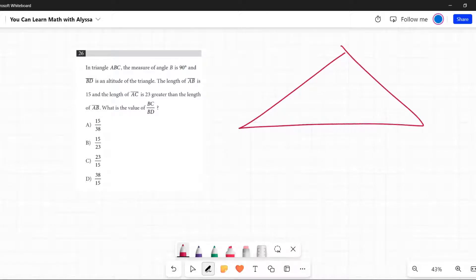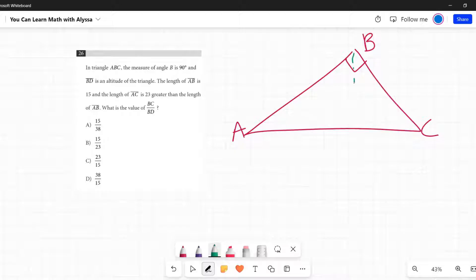Okay, so ABC. I'm going to try to draw this a little better. Eh, close enough. Angle B is 90, ABC, and BD is an altitude. So an altitude is a line that comes straight down. It's the height, so it's forming a right angle at the bottom. BD is the altitude.